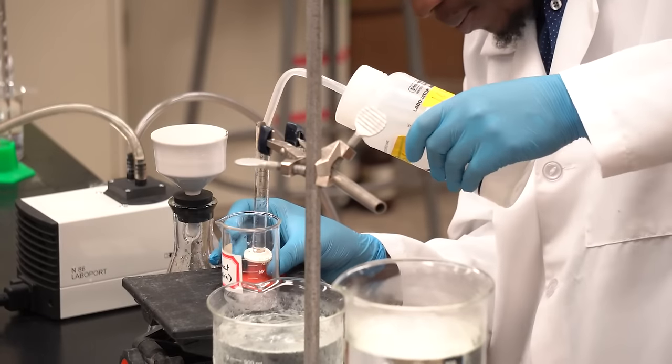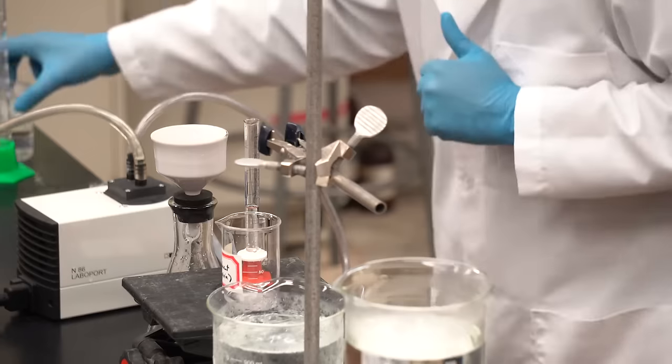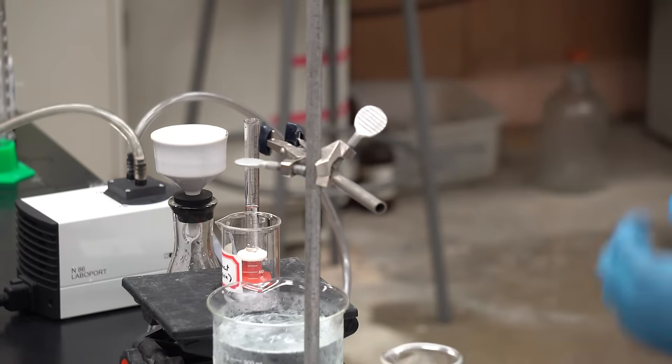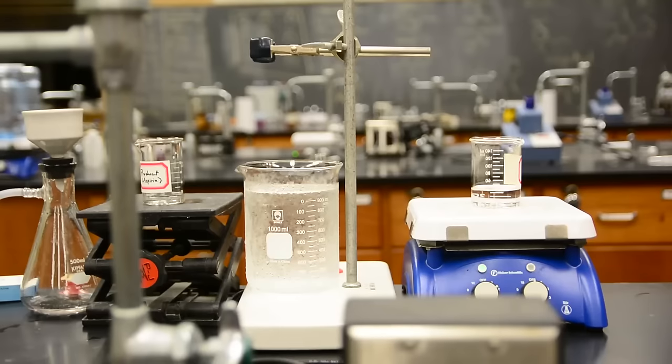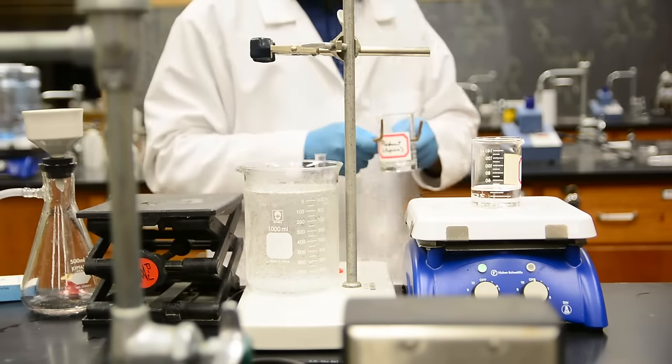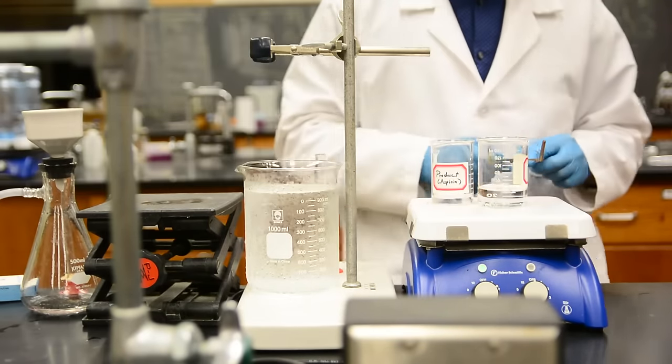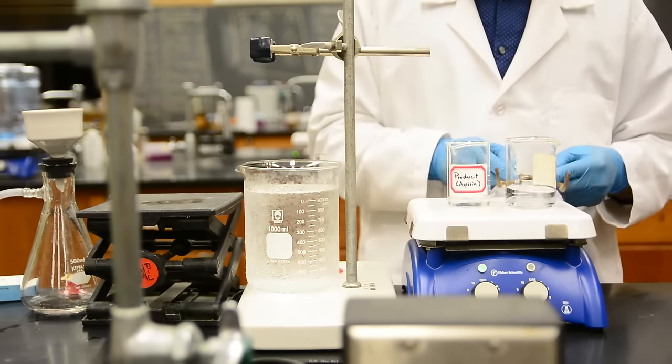Let's start by dissolving the impure aspirin in 5 milliliters of ethanol. While we do that, let's heat up some water on our hot plate. We'll then add 50 milliliters of hot water to the crude sample. This will start to dissolve. Let's then add the vessel to the hot plate and start adding more solvent.